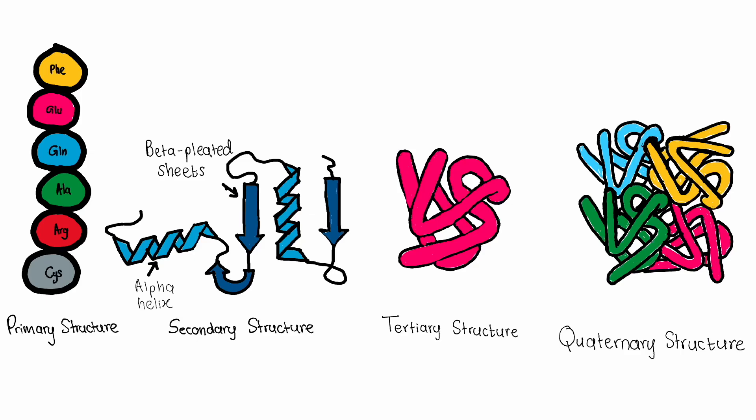Proteins are complex macromolecules made up of amino acids. Their structure can be described at different levels. The different levels include the primary, secondary, tertiary, and quaternary structures. Let's consider tertiary structures.